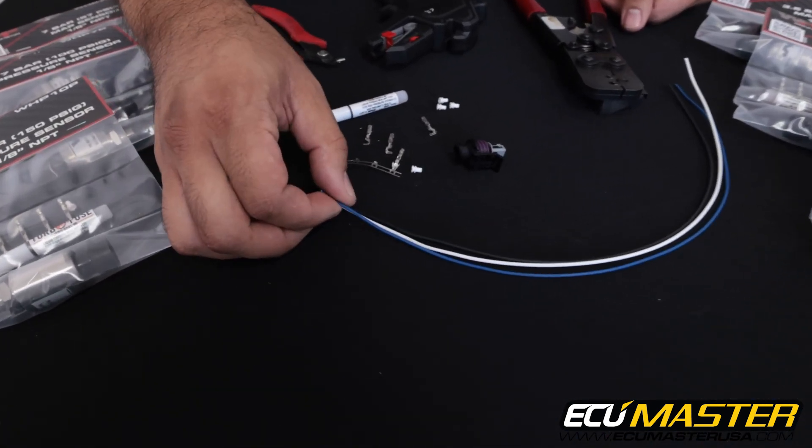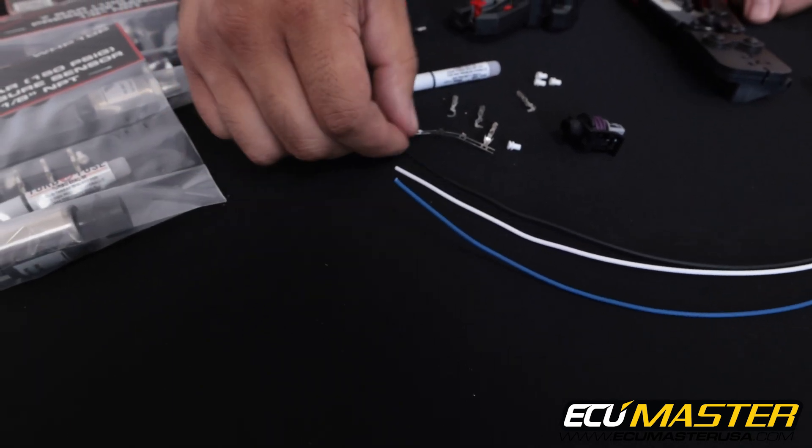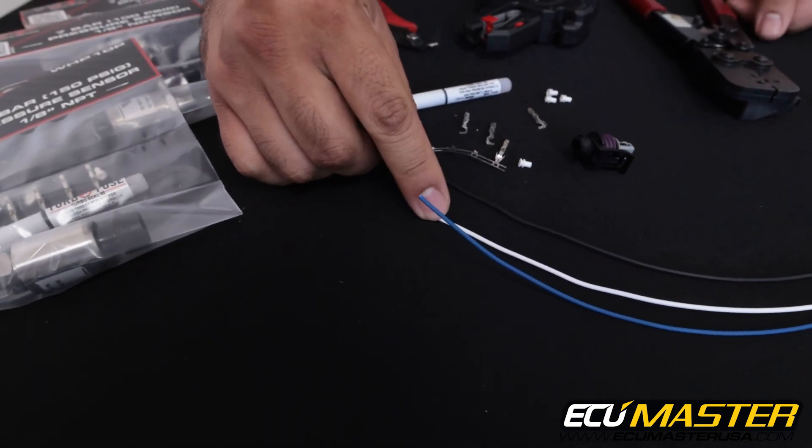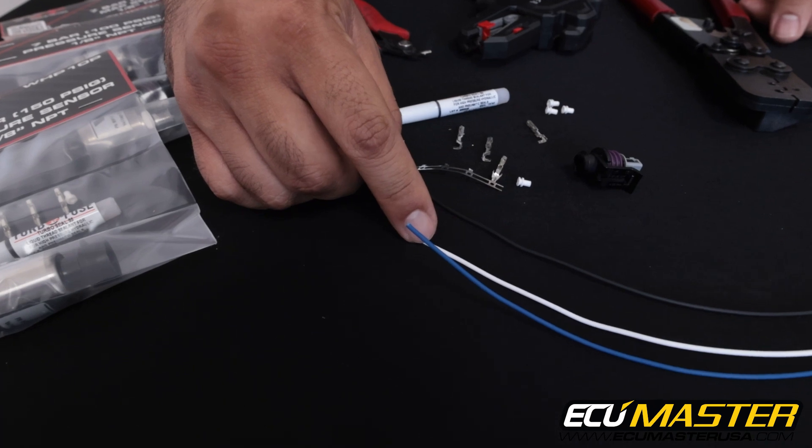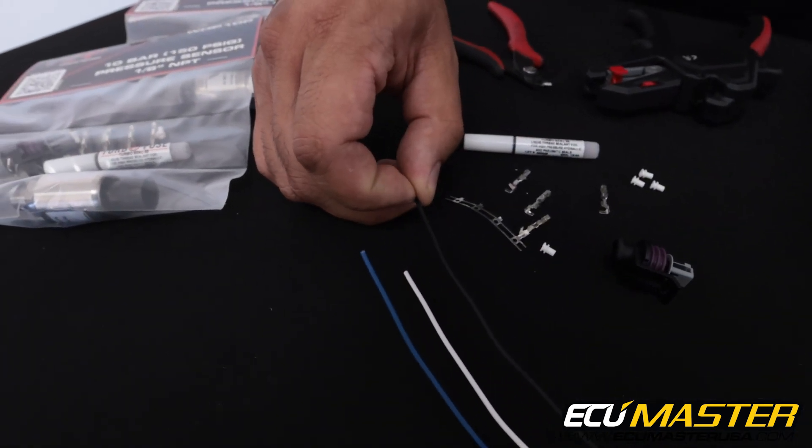For the wire color we use blue for our 5 volt reference, we're going to use white for sensor signal that goes to the analog input of the EMU, and then we're going to use black for sensor ground.